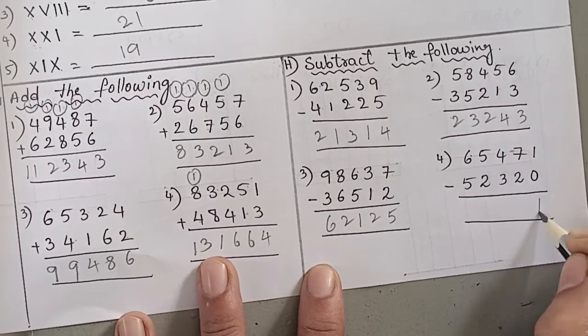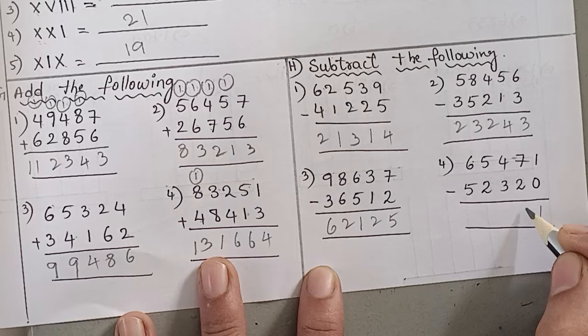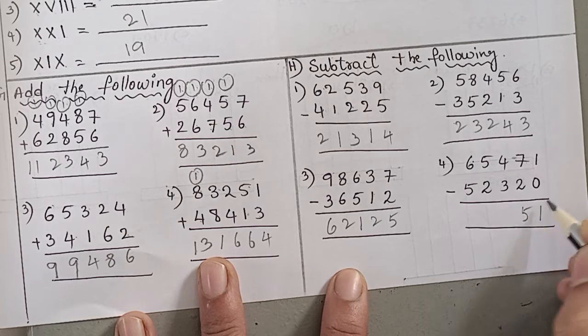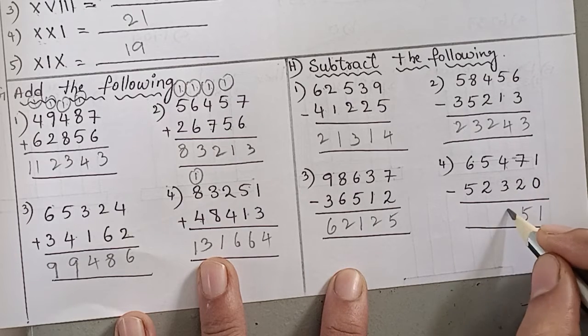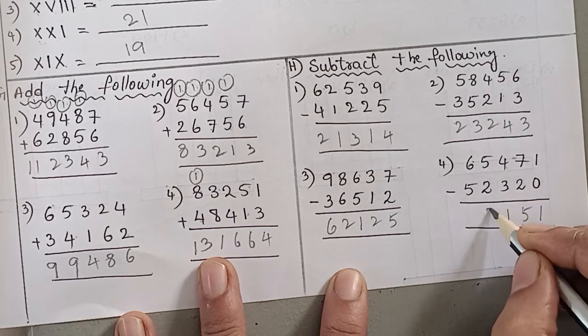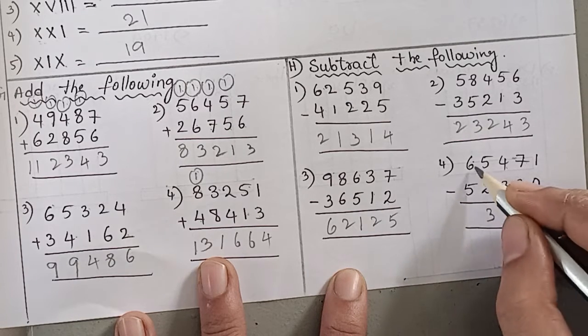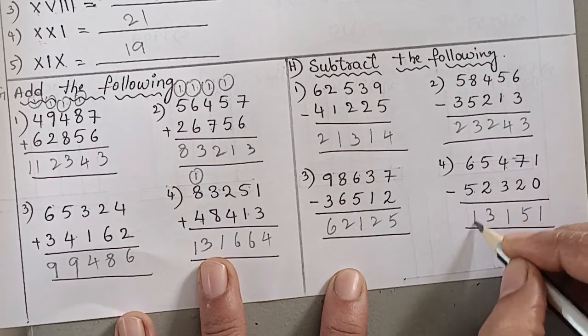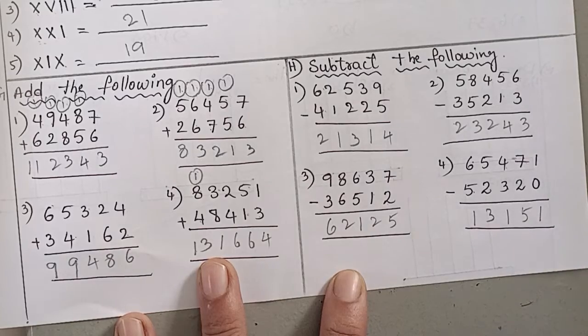Next: one minus zero is one. Seven minus two is five. Four minus three is one. Five minus two is three. Six minus five is one.